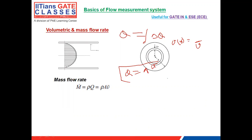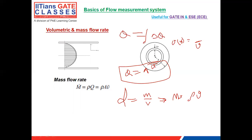Similarly, for mass flow rate: density ρ = mass per unit volume, so mass = ρ × volume. Integrating similarly, mass = ρ × Q. Differentiating with respect to time gives mass flow rate: ṁ = ρ × Q, and since Q = A × v, we have ṁ = ρ × A × v.